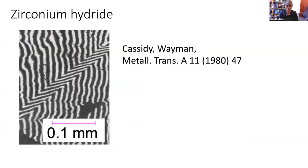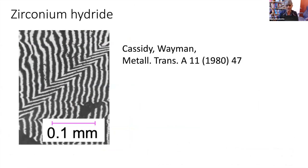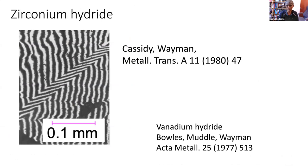In the case of zirconium hydride, Cassidy and Wiedemann showed that there is a perfect invariant plane strain shape deformation accompanying the hydride formation, even though the chemical composition of the hydride itself is much richer in hydrogen than the rest of the zirconium — and similarly vanadium hydride. Both of these transformations fit exactly the concept of para-equilibrium displacive transformations and fit perfectly with the crystallographic theory of martensite.